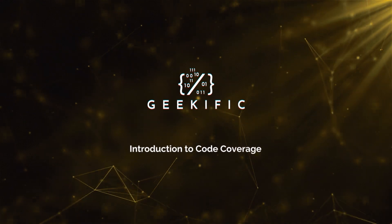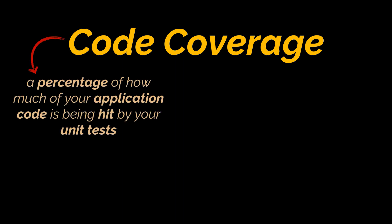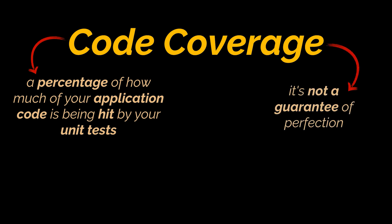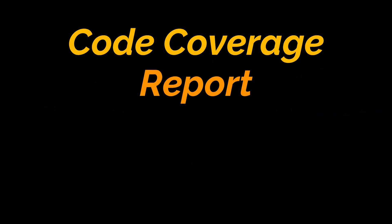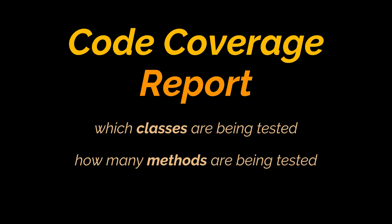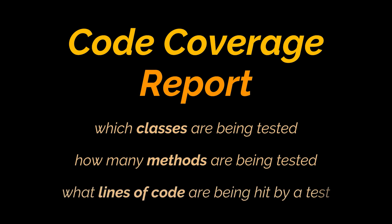What's up geeks and welcome to the channel. One number that's often measured while unit testing is code coverage. Simply put, this is a percentage measurement of exactly how much of your application code is being successfully hit by your unit tests. It's certainly not a guarantee of perfection — just because you've executed a line doesn't mean you've tested every possible combination of data and options. But code coverage will let you know what you're missing. Even the most basic reports will tell you how many classes and methods are being tested, and even whether individual lines of code are being hit by a test.